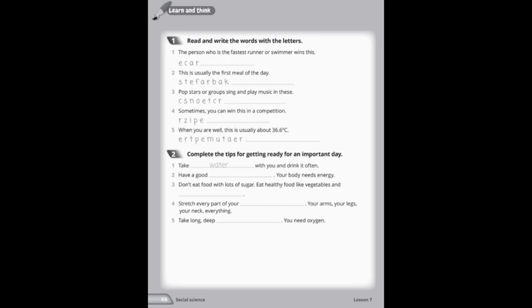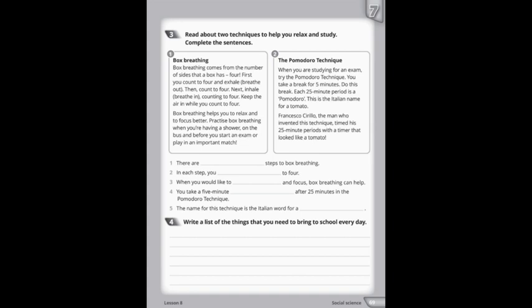5. Take long, deep [breaths]. You need oxygen. Exercise 3, page 69. Read about two techniques to help you relax and study. Complete the sentences. 1. Box breathing. Box breathing comes from the number of sides that a box has: 4. Breathing is дихання, and box is коробка.